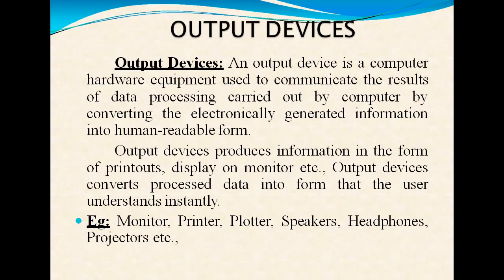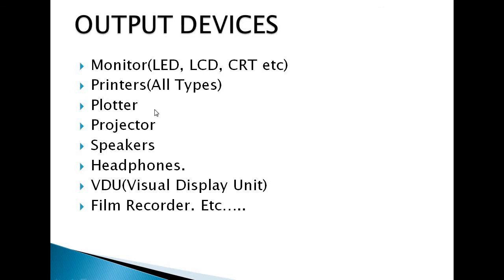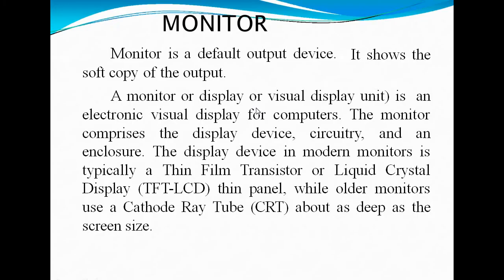Output devices are computer hardware equipment used to communicate the results of data processing, converting electronically generated information into human-readable form. Output devices produce information in the form of printouts, displays, or monitors and convert data into a user-understandable form. Some output devices include monitor, printer, plotters, speakers, headphones, visual display units, and film recorders.